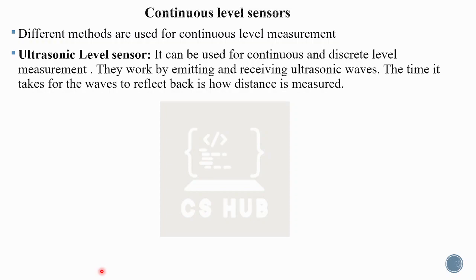Ultrasonic level sensors can be used for both continuous and discrete measurement. They work by emitting and receiving ultrasonic waves. The time it takes for the waves to reflect back is how distance — and therefore the level — is measured.